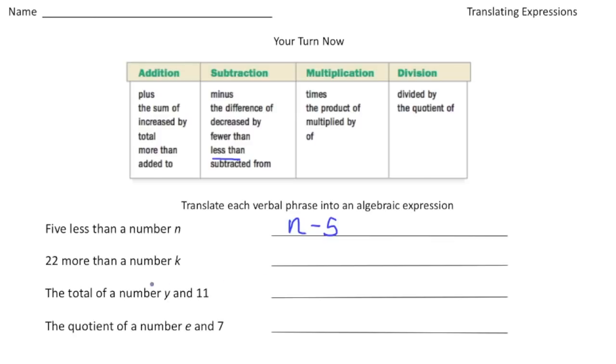Next one, 22 more than a number k. Well more than is associated with addition, so that's going to be k plus 22. Next one, the total of a number y and 11. Well total again is associated with addition so that one's going to be y plus 11.